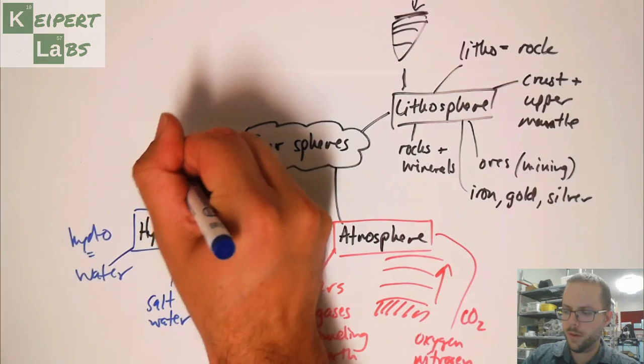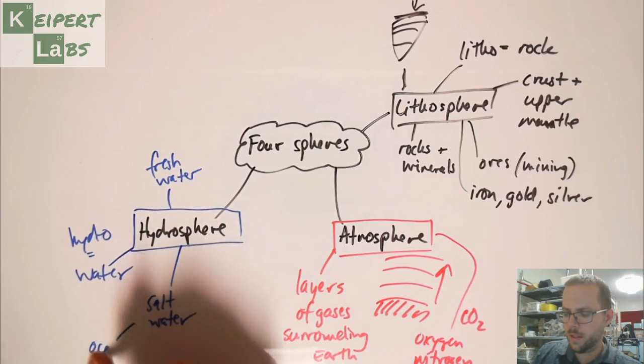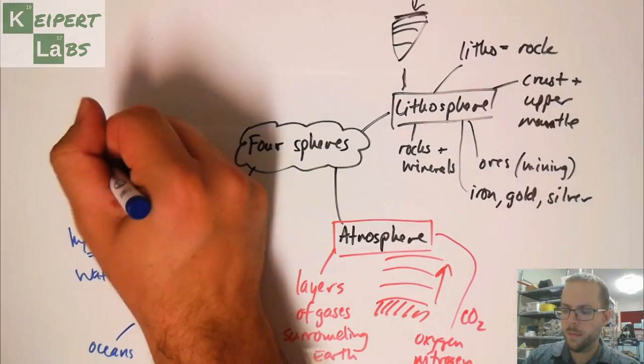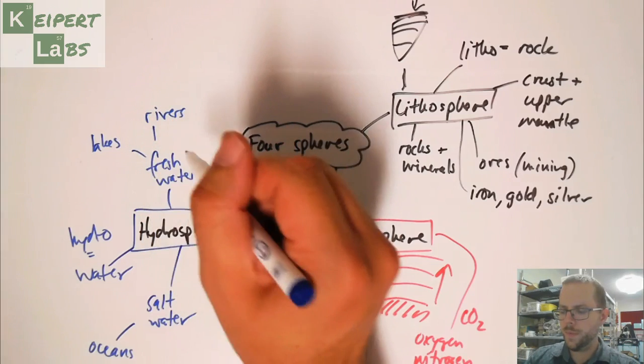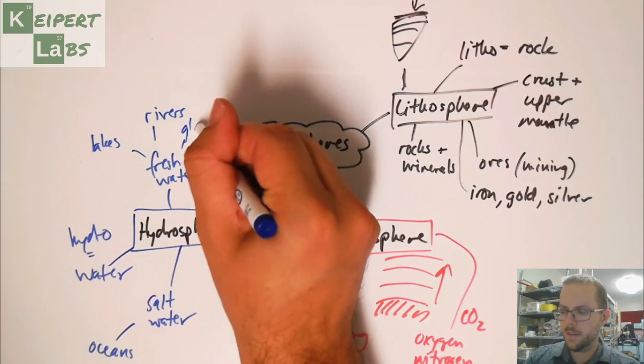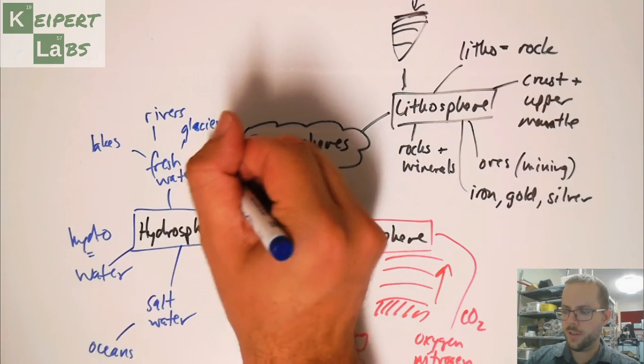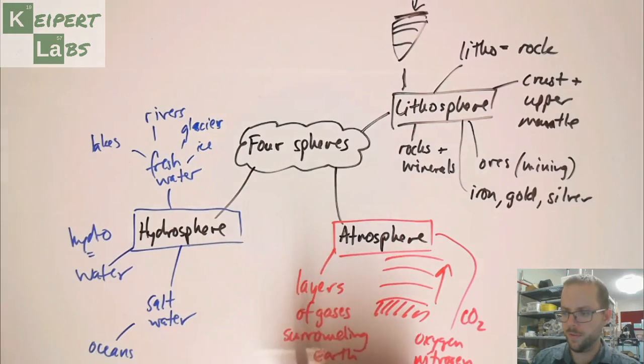Salt water, so we're thinking typically about the oceans. Fresh water, then we might be thinking about freshwater lakes or rivers. We might be thinking about glaciers. So glaciers or kind of ice, icing in a range of different forms.